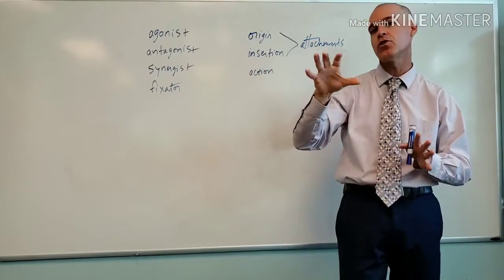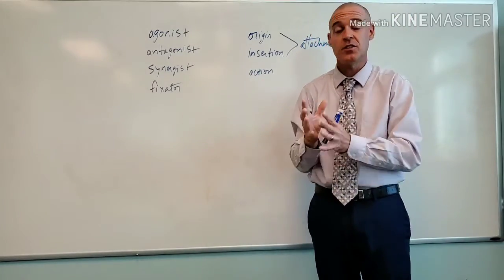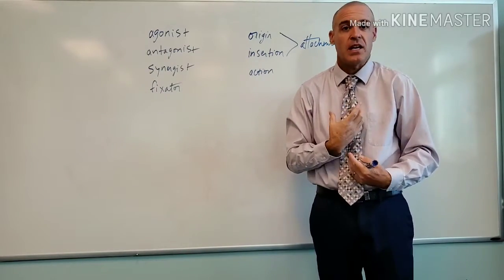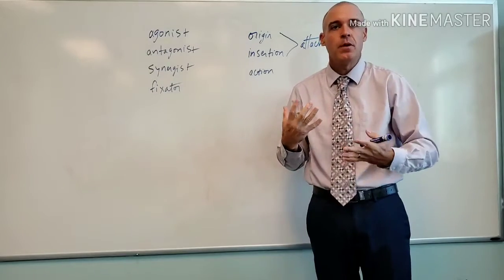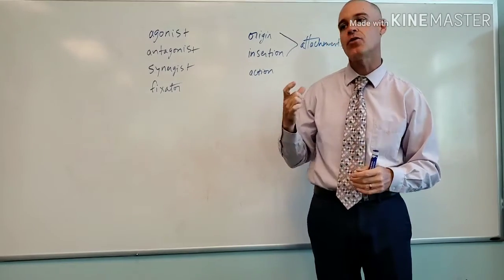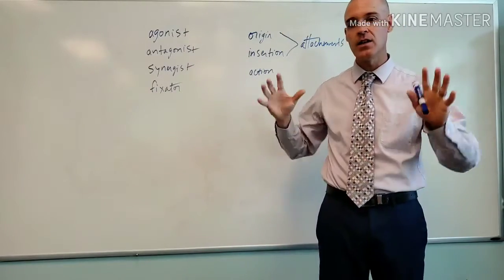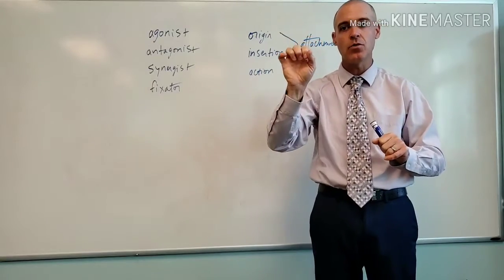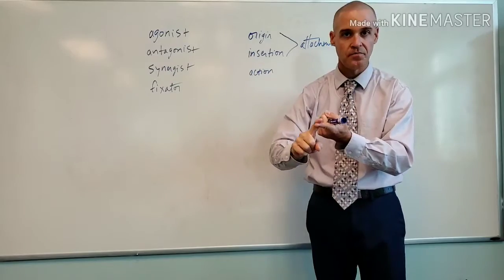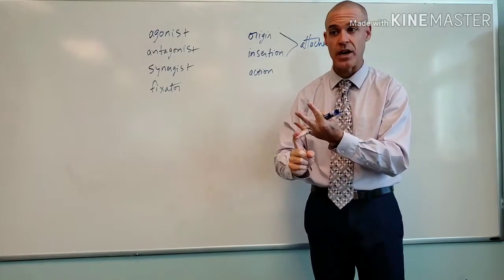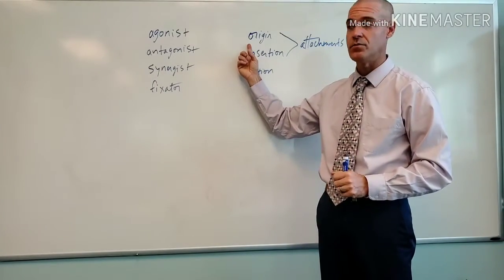Which means sternum and clavicle are the origin, and the mastoid process is the insertion. Here's another good rule of thumb: if a bone doesn't move much by its nature — for instance, the sternum is a rigid bone — and while there is some movement between the sternum and clavicle and the ribs, generally the sternum is rigid. The clavicle moves some when you flex or abduct the shoulder, but it moves very little. So most muscles that attach to bones like the sternum, clavicle, or scapula are going to be origins almost every single time — 99% of the time.